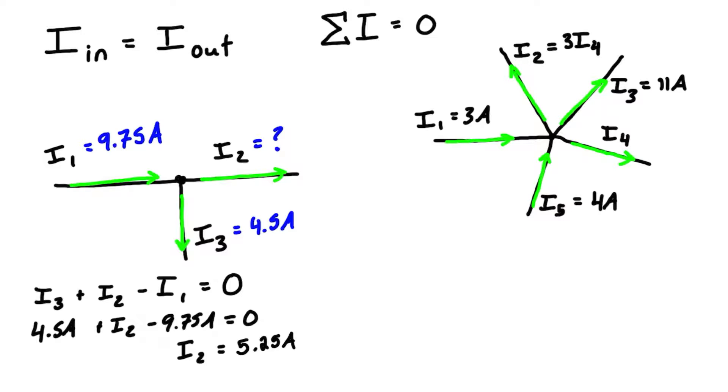What we need to do to solve this problem is set it so everything sums to zero. Let's pick inward currents as negative and outward currents as positive.